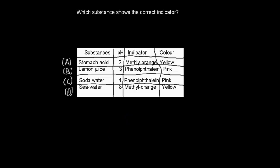Next question is, which substance shows the correct indicator? Stomach acid, pH of 2, methyl orange, color yellow. Lemon juice, pH of 3, phenolphthalein as the indicator, pink as the color. Soda water, pH of 4, phenolphthalein as the indicator, pink as the color. Seawater, pH of 8, methyl orange as the indicator, yellow as the color. When you're ready, pause the video and attempt the question.